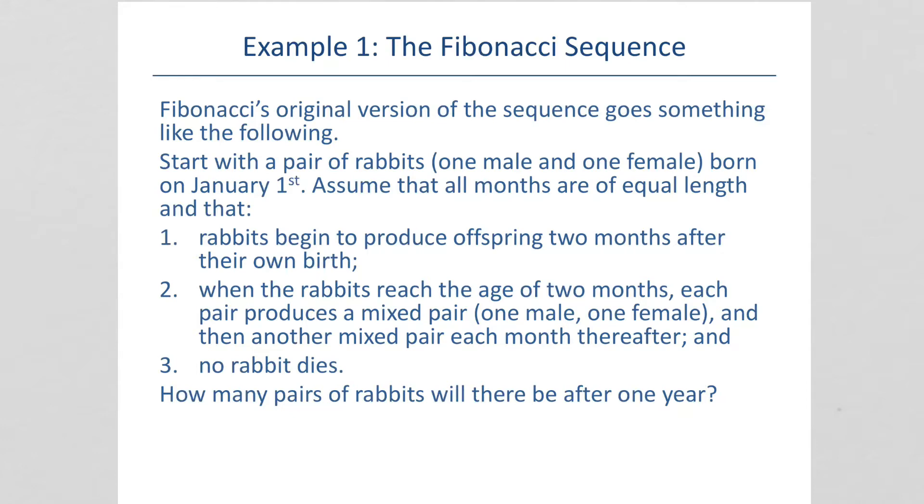Assume that all months are of equal length and that rabbits begin to produce offspring two months after their birth. When the rabbits each reach the age of two months, each pair then makes another pair. And assume that no rabbit dies. How many pairs of rabbits will there be after a year?